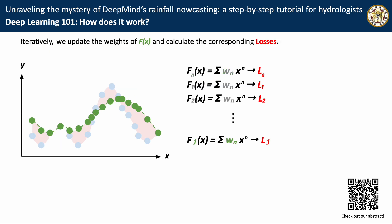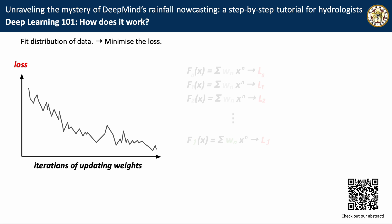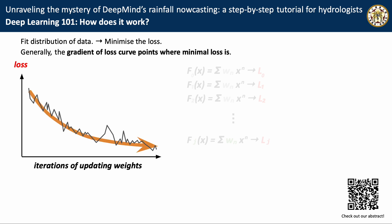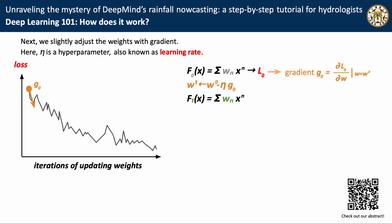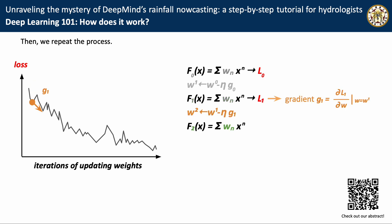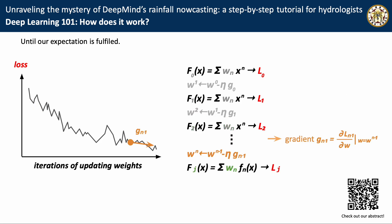This distance is what's called loss. Iteratively, we update the weights of the function and calculate the corresponding losses. The question is how to update these weights. Our target is to fit a distribution of the data — in other words, we are trying to find the minimal loss. We can see from the figure that an ideal loss curve's gradient vector usually points to where the minimal loss is. So in deep learning, we take the advantage of gradients: we calculate the gradient of each weight, multiply it with the learning rate, and use this value to adjust the weights. We repeat this process until our expectations are fulfilled.